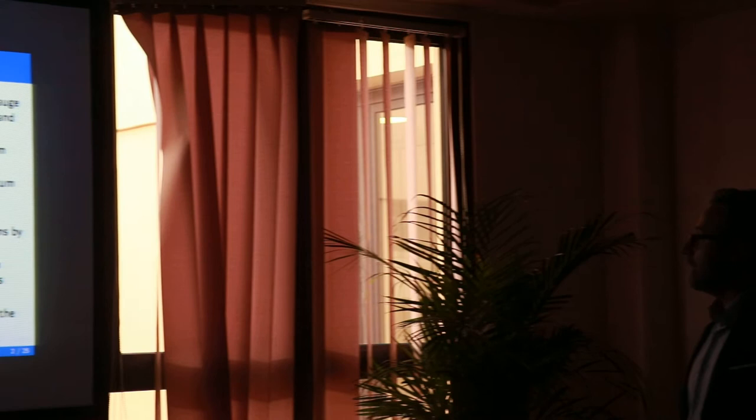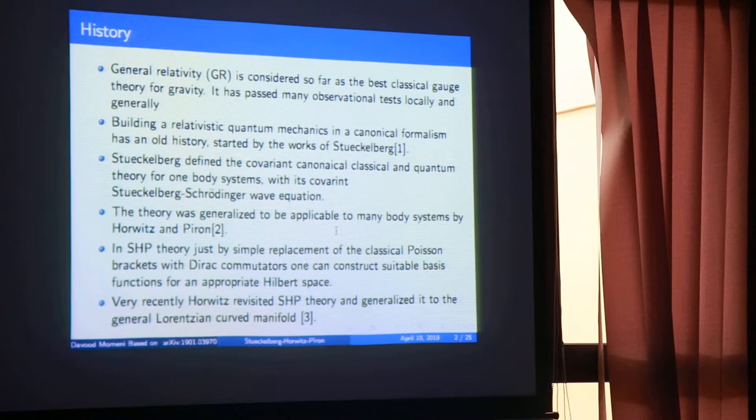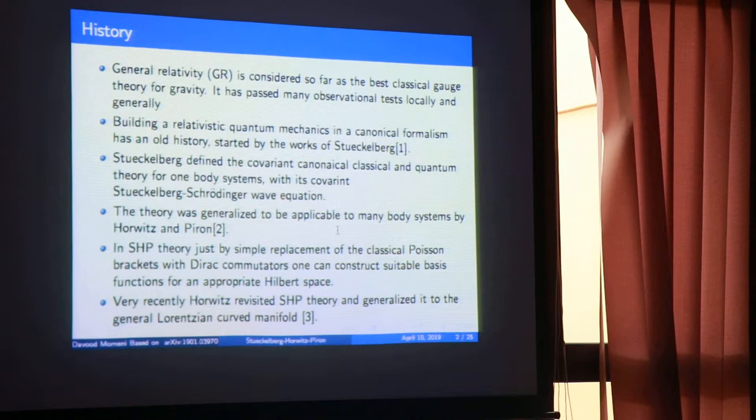General relativity is considered a classical gauge theory for gravity, and it passes many observational tests. It's a really good theory if you forget about the dark energy and forget about all the data after 1988 regarding the accelerating expansion. Still, there is only one theory that passes all the tests, and that is general relativity, proposed by Einstein. All tests, locally and generally, are passed by general relativity.